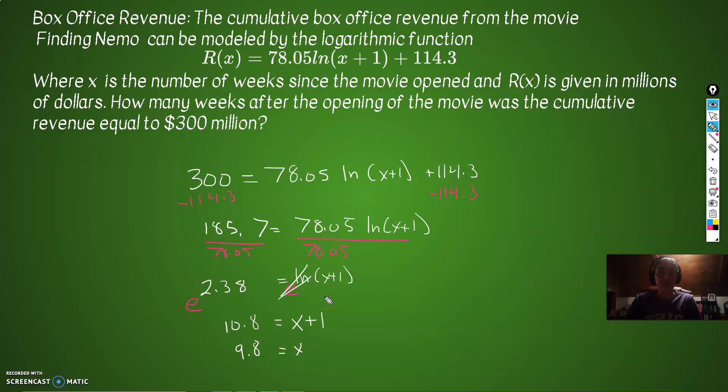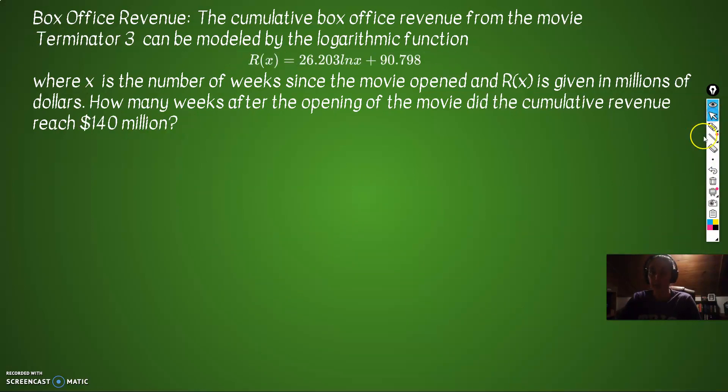So what is the question? How many weeks after the opening of the movie was the cumulative revenue equal to 300 million? 9.8 weeks after, which is huge. Finding Nemo did great. Obviously, 300 million dollars is a lot of money. Okay, let's see if we can do the same thing about Terminator 3.